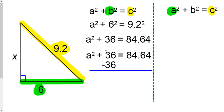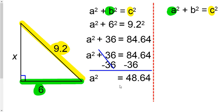Yep, you sure can. And so if you subtract the 36 on the left side, and then subtract 36 on the right side, it cancels out this 36 on the left side, where this A squared falls down, and now it's all by itself. And 84.64 minus 36 is 48.64.